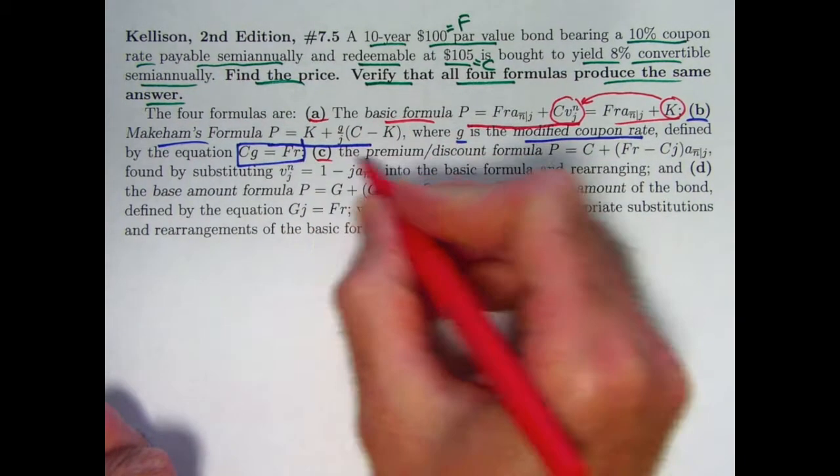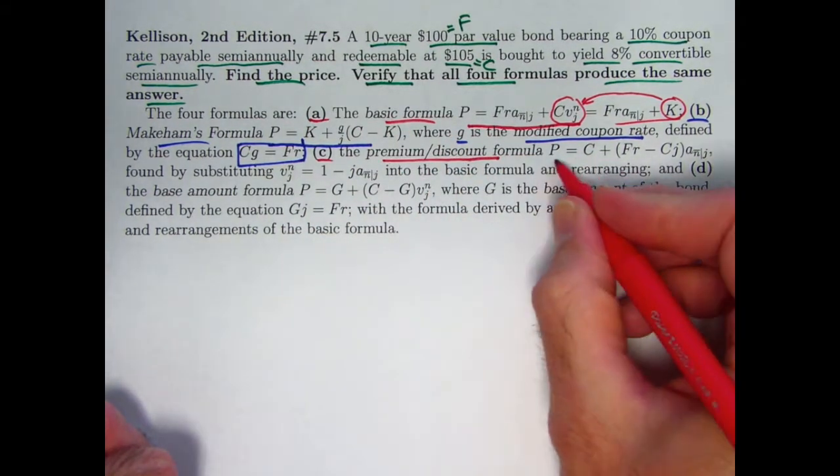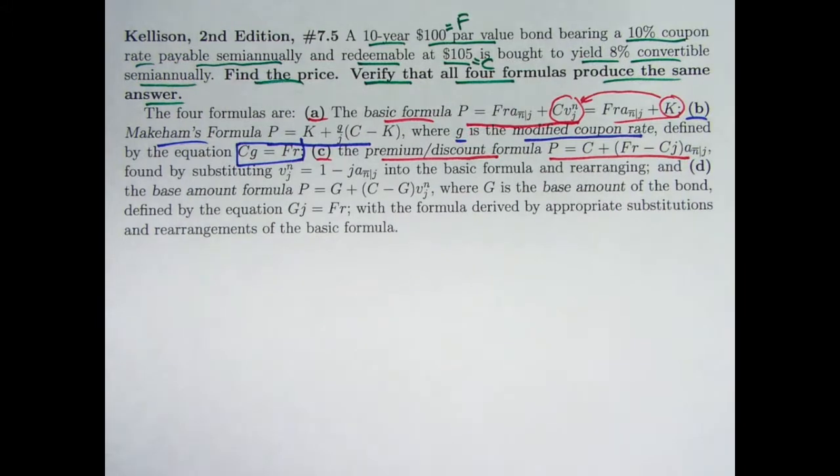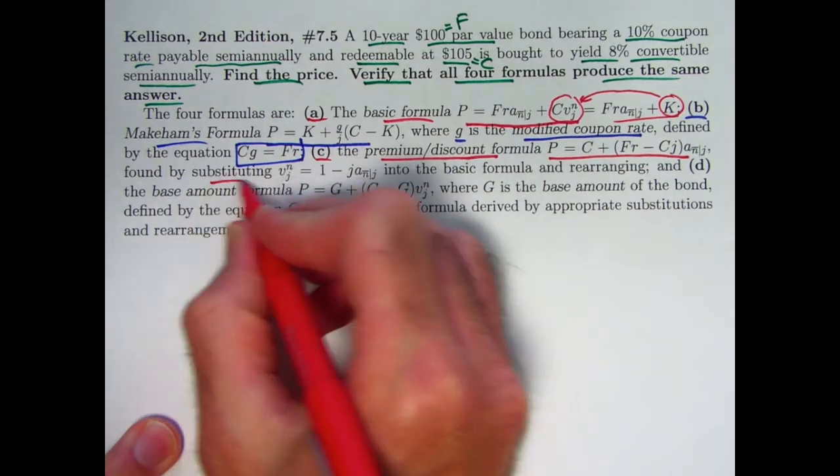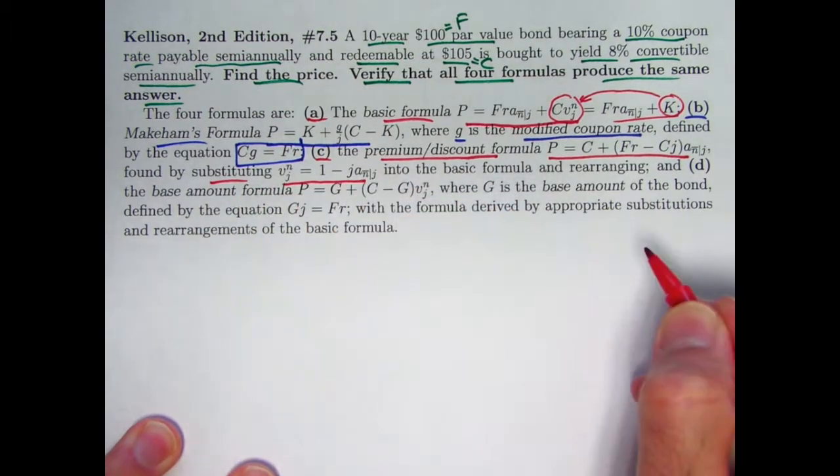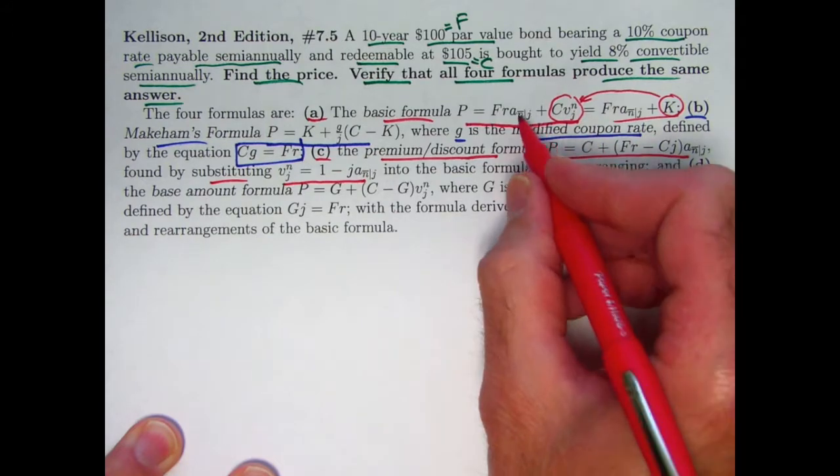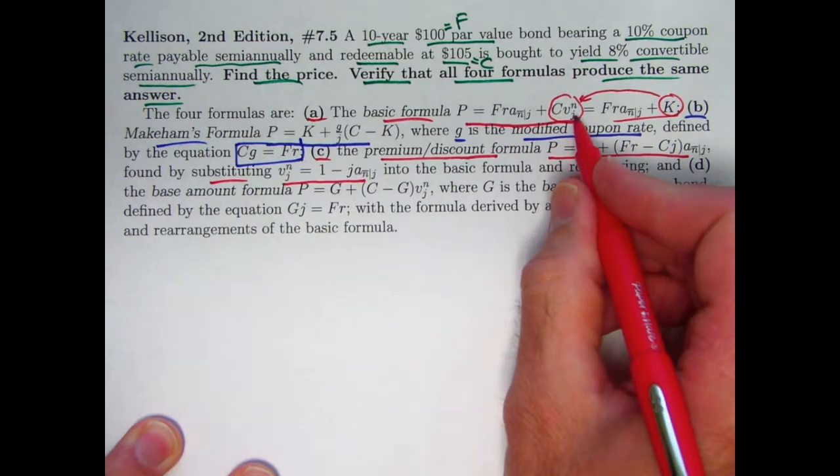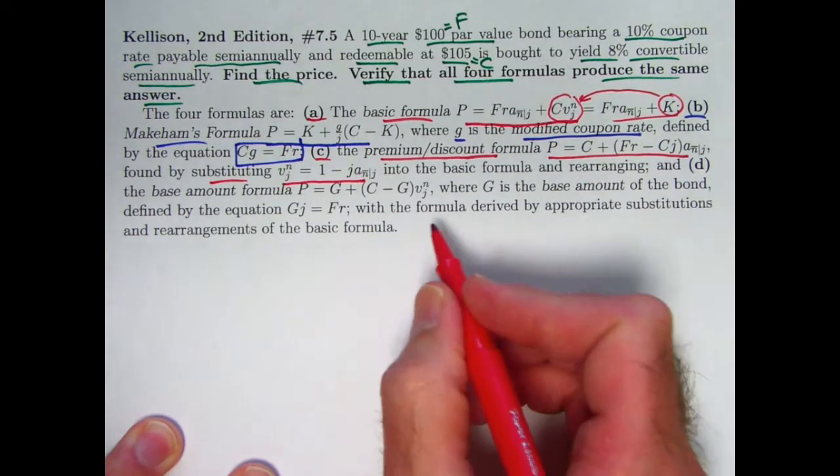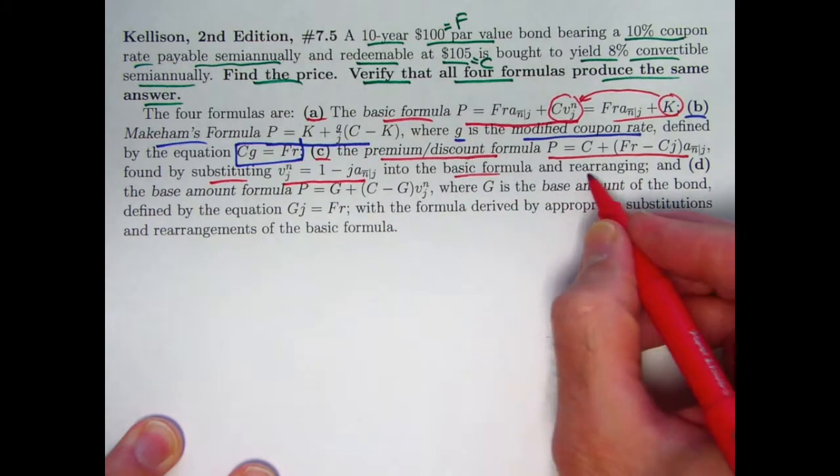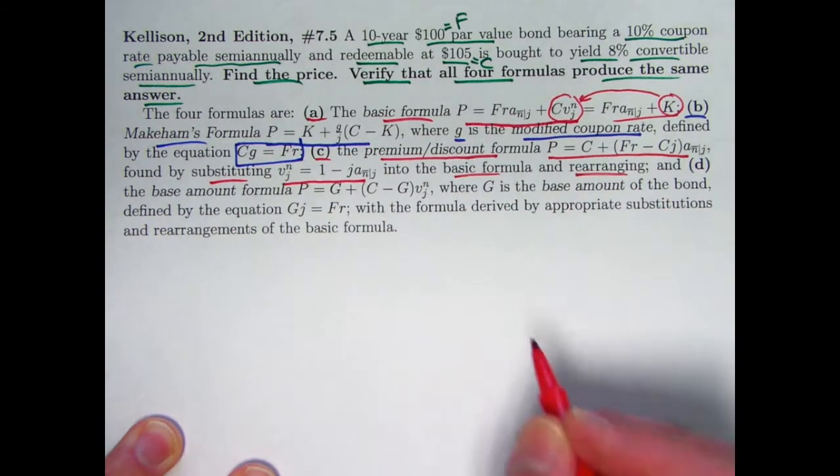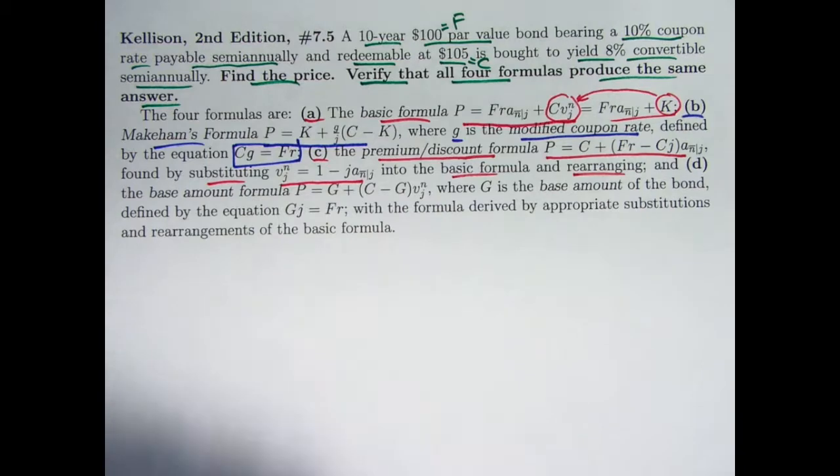The next formula is a new formula. Premium discount formula is its name. Looks like this. These are all quantities you've seen before. As a little exercise, you should try to derive this on your own. I'll give you some hints. You could substitute this quality in for V to the N up here. And when you do that thing, actually right there, because you want to get this in terms of A, N, into that basic formula and rearrange to see that you can get this.